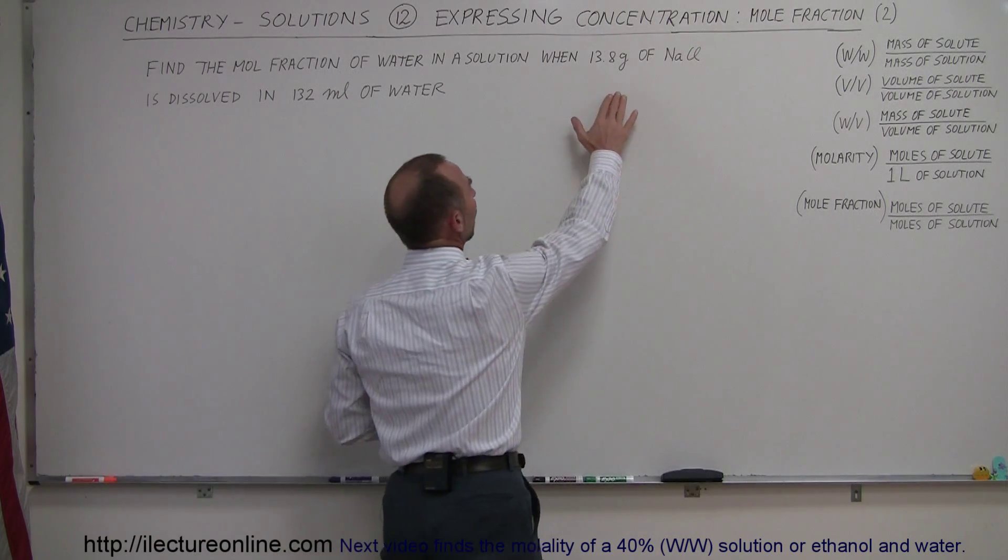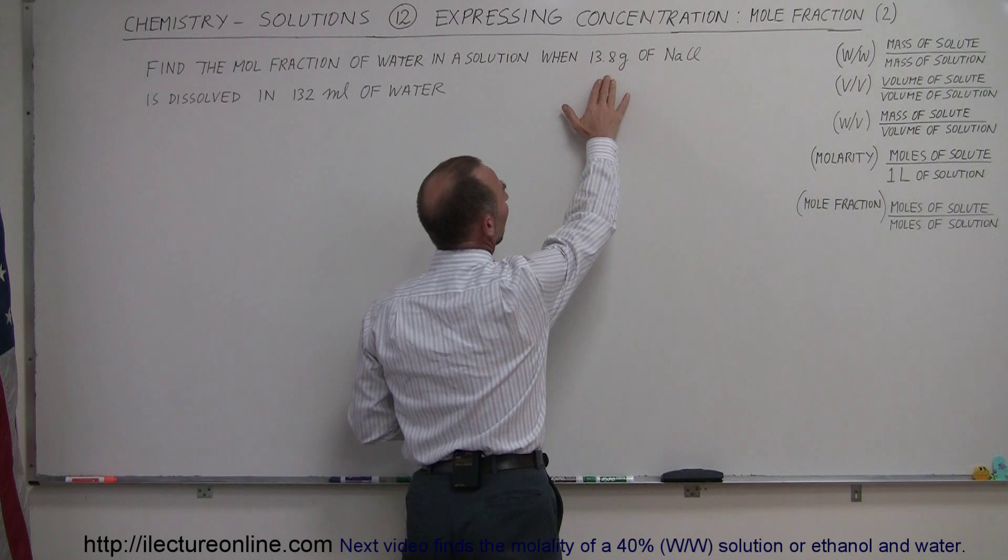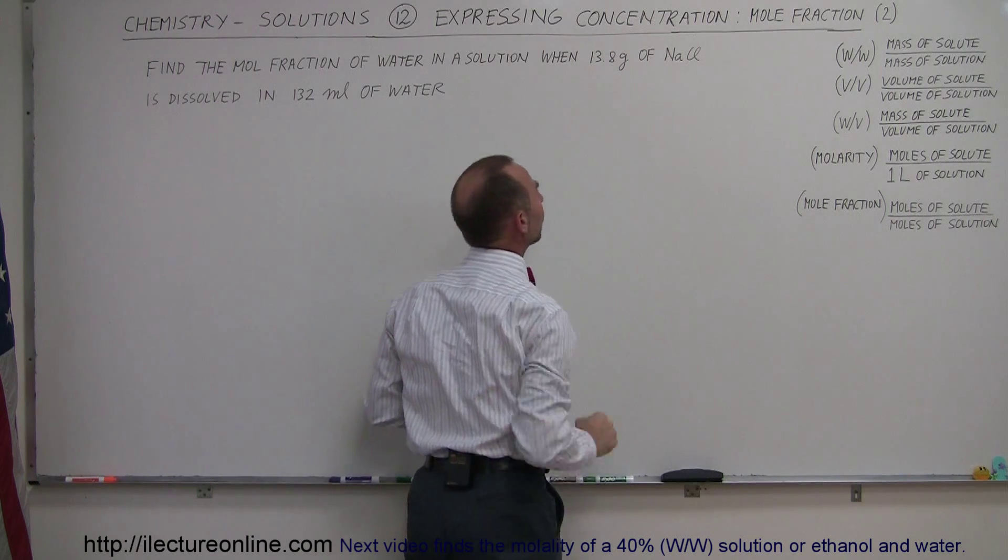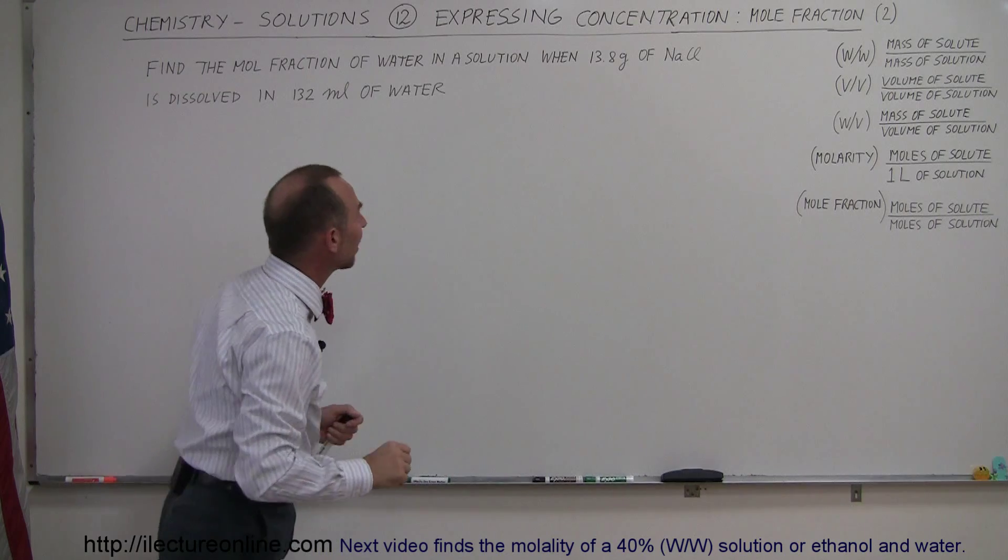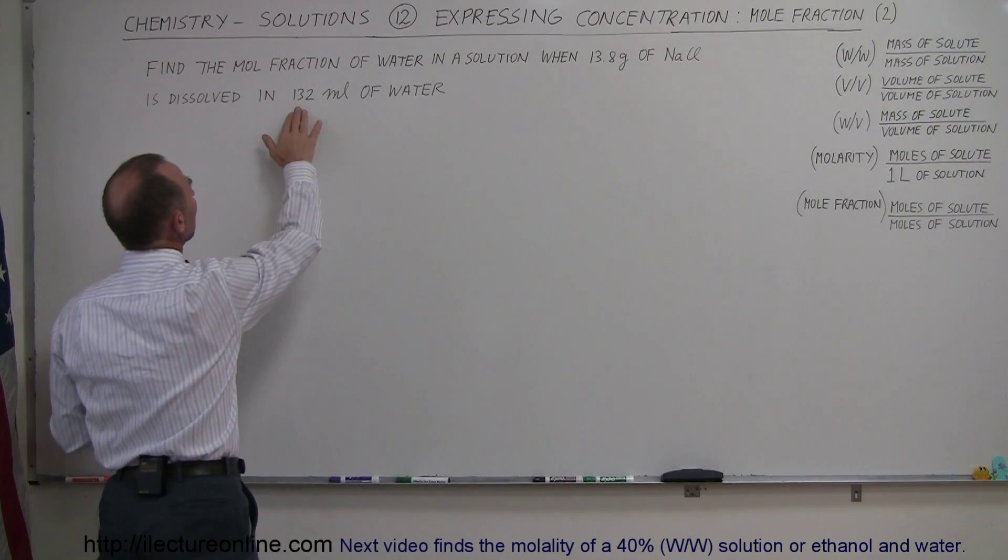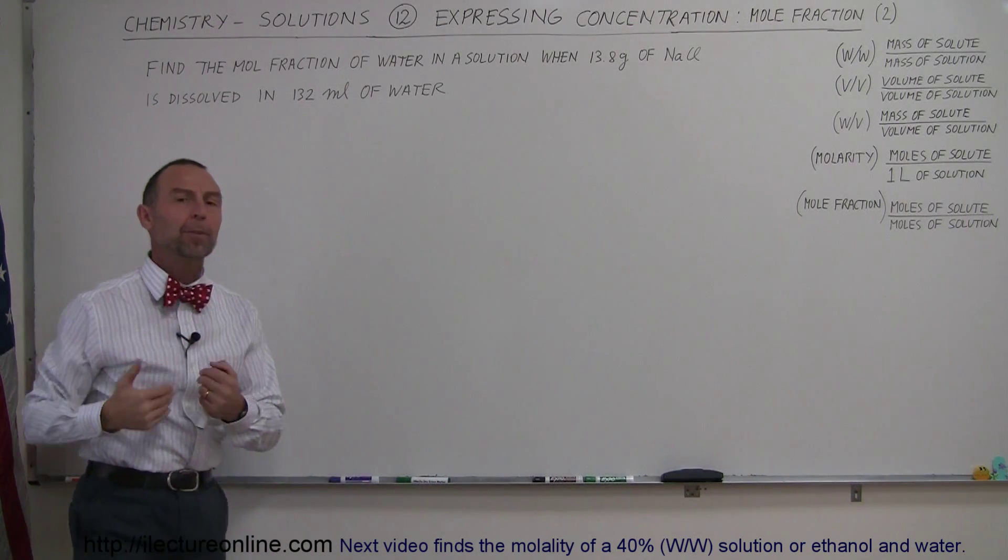So, what we need to do is find out what the molar mass is of sodium chloride and then find how many moles this represents. And then we have to find out how many moles 132 milliliters of water is and then come up with the fraction.